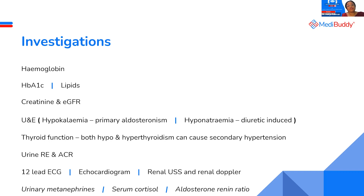Urinary metanephrine, serum cortisol, or aldosterone-renin ratio — these are used to screen for hyperaldosteronism, Cushing's syndrome, or pheochromocytoma. We don't do these routinely every day. Only if your suspicion level is high, or if you are facing a case of resistant hypertension and sending the patient to a specialist, would you consider these investigations.